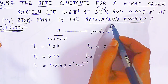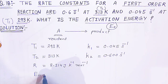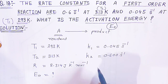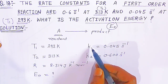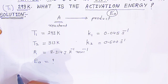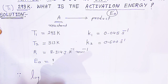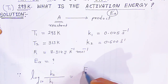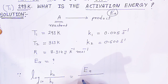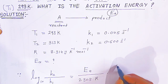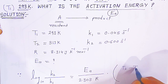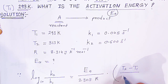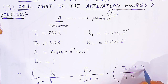You should know the formula when there are two rate constants at different temperatures. The formula is: log base 10 of the ratio K2 upon K1, which is equal to Ea divided by 2.303 into R, multiplied by the difference in temperature T2 minus T1, divided by the product of T1 and T2.